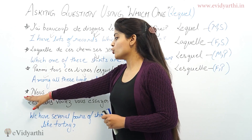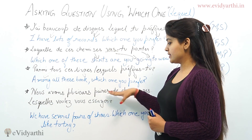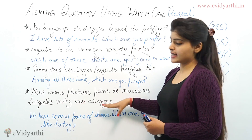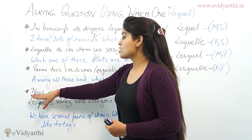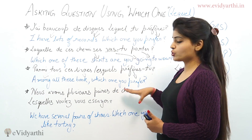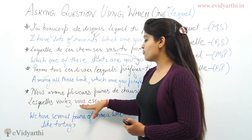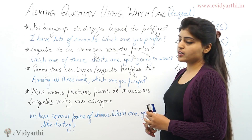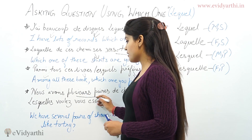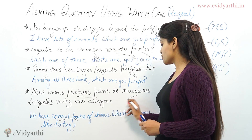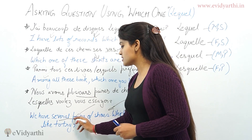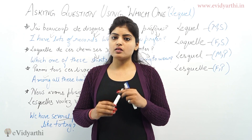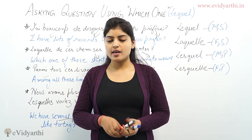The last example uses lesquelles: 'Nous avons plusieurs paires de chaussures, lesquelles voulez-vous essayer?' meaning 'We have several pairs of shoes, which ones would you like to try?' Here, 'plusieurs paires' means several pairs, 'chaussures' means shoes, and 'essayer' means to try.